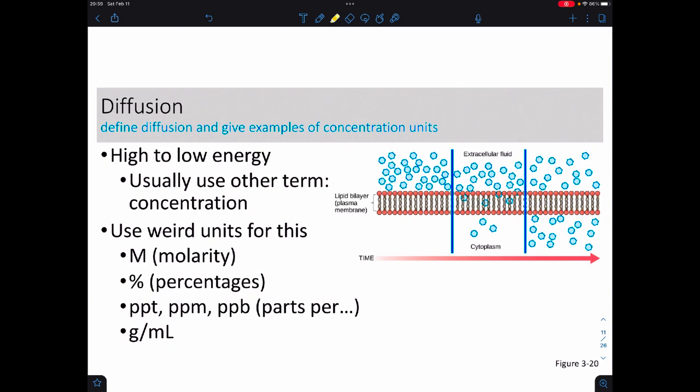One of those patterns is called diffusion. So diffusion is a pattern we can witness. Diffusion is the movement from high to low energy. So usually people don't talk in terms of high to low energy. We actually use the term concentration, meaning things move from high to low concentration.